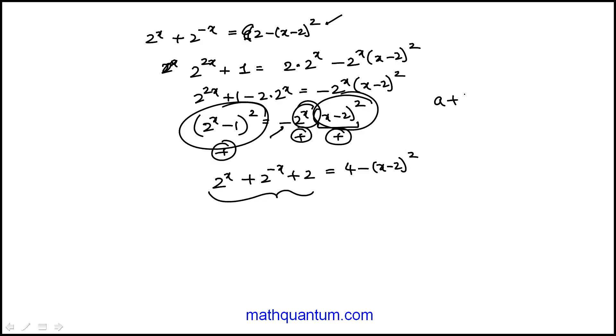Well I'm familiar with the a plus 1 over a square identity, and thinking that would help me square that because this is really 2 to the x plus 1 over 2 to the x plus 2.